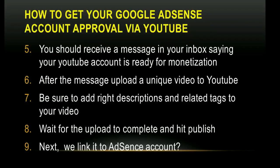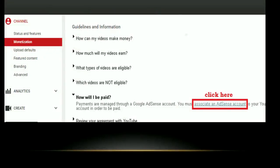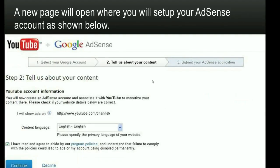Once published, you need to link your YouTube channel to your AdSense account. Since you don't have an AdSense account yet, here's what to do: go to Settings, then click on Monetization. You will see account status — click on 'How will I be paid?' You will then see a link that says something like 'Associate an AdSense account.' Click on that link to associate your AdSense account. It will ask you to log in or sign up.